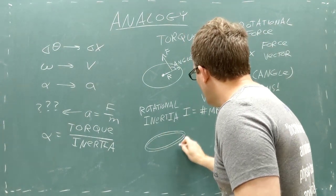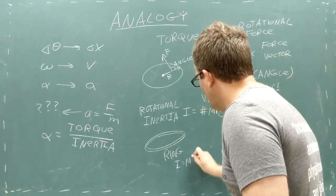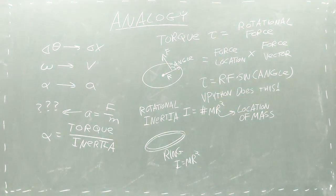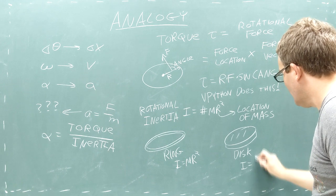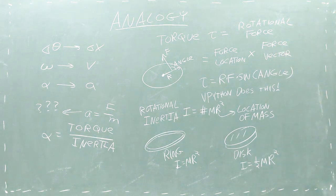For example, the rotational inertia of a ring is the ring's mass times its radius squared, while the rotational inertia of a disk is one-half mass times radius squared. Every shape has a different rotational inertia, which you usually look up in a table.